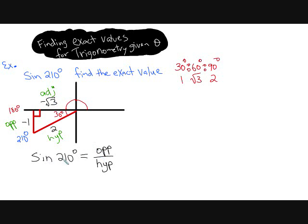So now we can answer the question. Opposite is the value of negative 1. Hypotenuse is the value of 2. So the answer is negative 1 half.